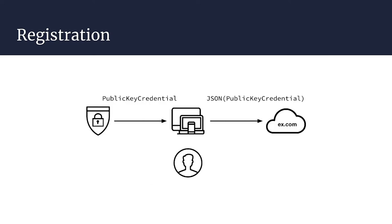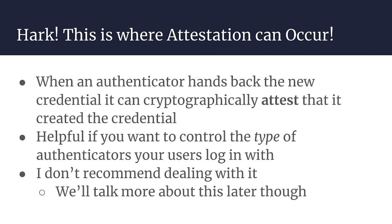If the user says yes, the authenticator does some computation and hands back a new public key credential along with some additional information. This public key credential is specific to x.com — each site in WebAuthn gets a unique scoped credential. The private key is always stored by the authenticator only and never leaves it, but the public key can go wherever. The authenticator also hands back information to prove who it is to the relying party. It's important to note that in the public key credential response, this is where attestation can occur.